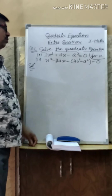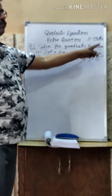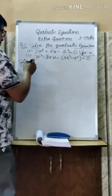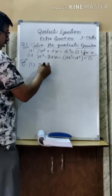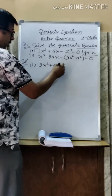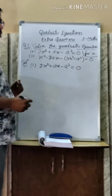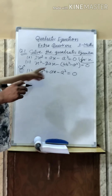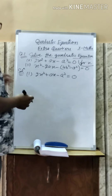So, if one question I have written here: solve the quadratic equation for X. It means we have to solve for X. The first equation is 2X squared plus AX minus AX squared is equal to 0. You have to solve for X, meaning you have to find out the value of X.